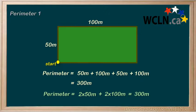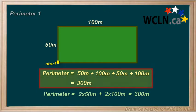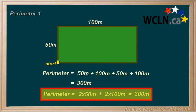To determine the perimeter of a rectangle, you just add up all the sides. Or, if you want to be tricky, you can say, two times the length, plus two times the width.